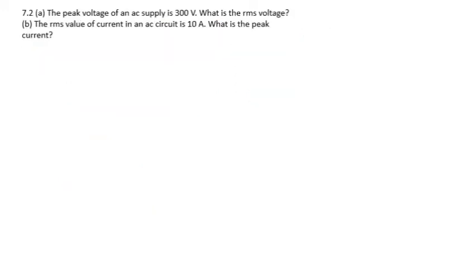Next question has two sub-questions. Sub-question A: the peak voltage of an AC supply is 300 volt. What is the RMS value of voltage? The given V₀ peak value is 300 volt, so V_RMS = V₀ / √2 = 300 / 1.414 = 212.1 volt.